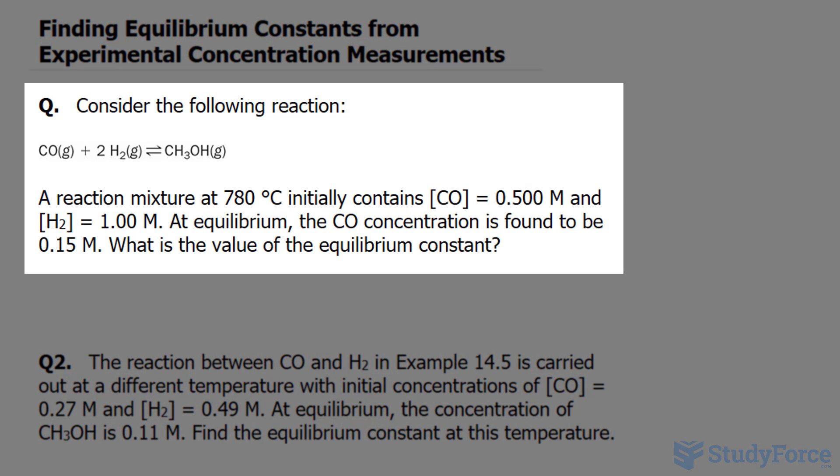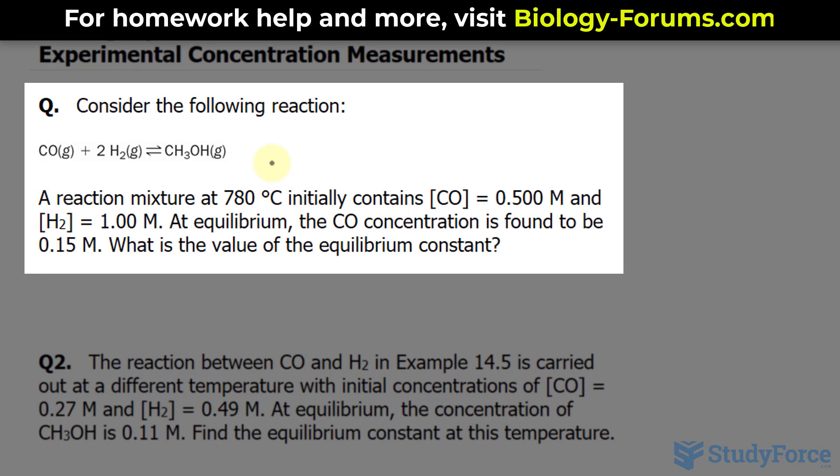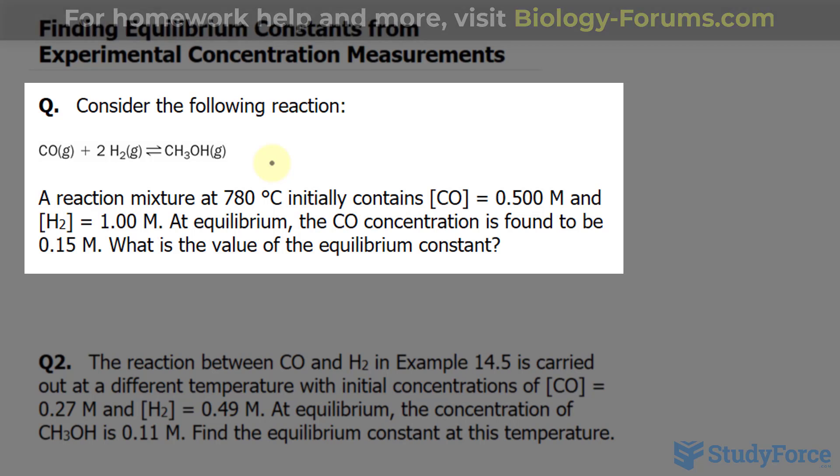The question reads, consider the following reaction, shown here. A reaction mixture at 780 degrees Celsius initially contains a concentration of CO equaling 0.500 molar and a concentration of H2 equaling 1 molar.